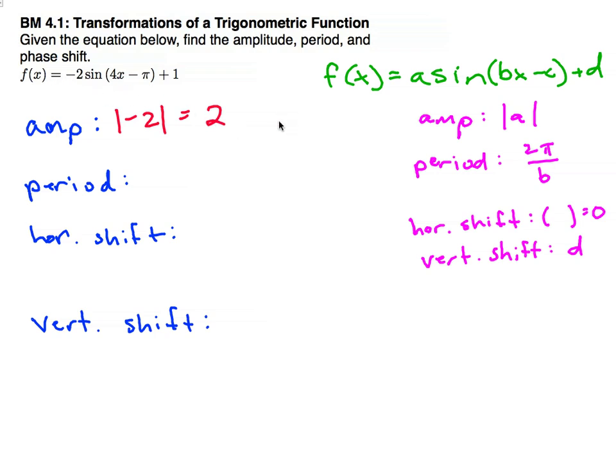And by the way, the negative sign just means for the graph, rather than sine starting at 0 and going up to 1, we're going to start at 0 and go down to negative 1, and back up, actually negative 2, because of the amplitude.